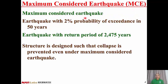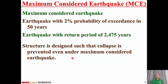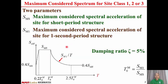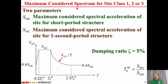Maximum Considered Earthquake is an earthquake with 2% probability of exceedance in 50 years, or an earthquake level with return period of 2,475 years. Even under Maximum Considered Earthquake, the structure should be designed such that collapse is prevented. For the maximum considered spectrum for site class 1, 2, 3, we have two parameters to determine the maximum considered spectrum.